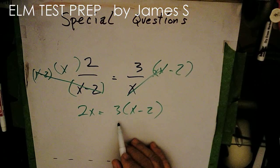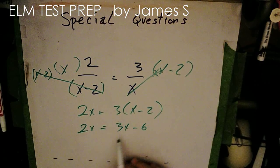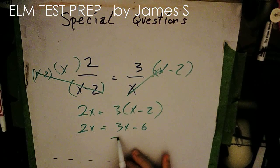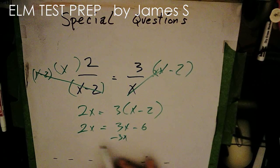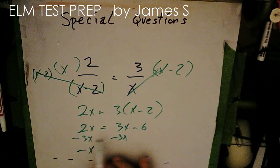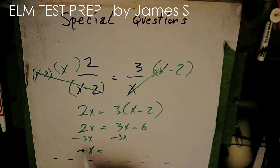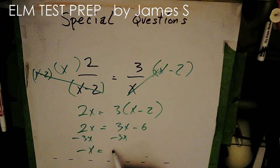Well, I'm going to distribute this. 3x minus 6 equals 2x. I'm bringing a 3x, so I subtract 3x from this side to undo that. So I have a minus x equals minus 6.